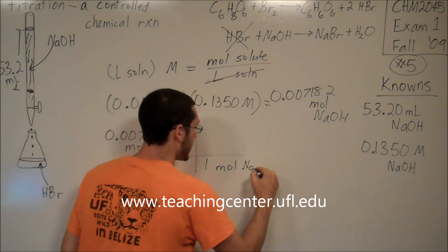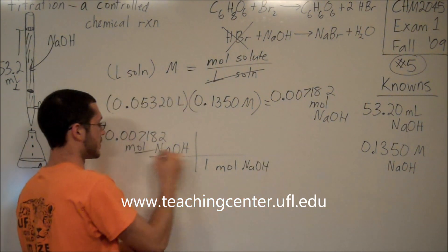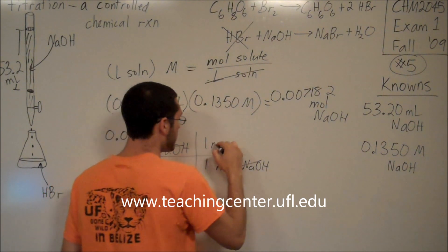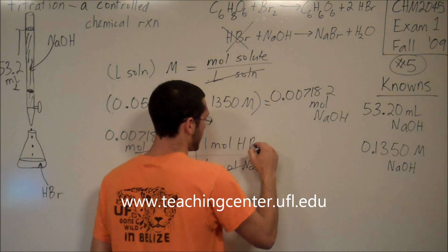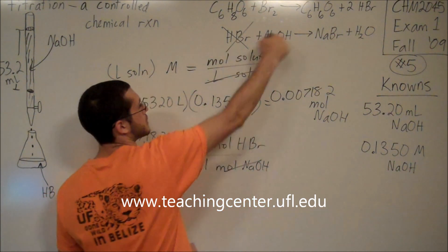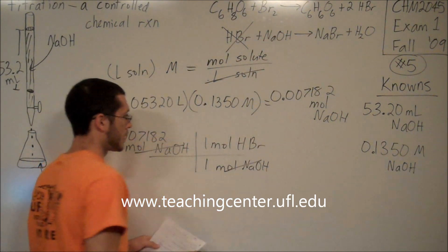And a conversion will show us this. For every one mole NaOH, so that moles of NaOH cancel moles of NaOH, I have one mole HBr. How do I know it's one-to-one? According to this second equation.